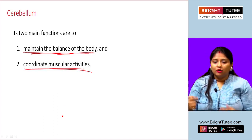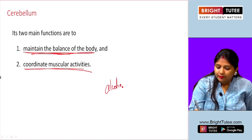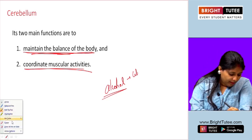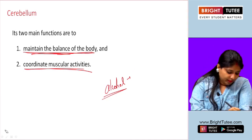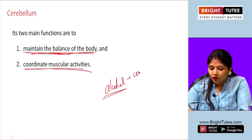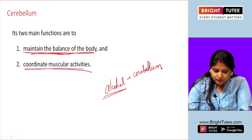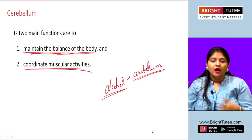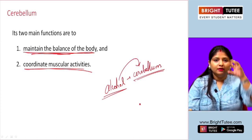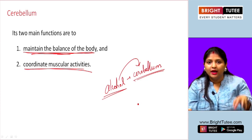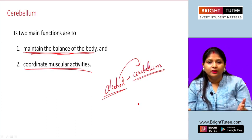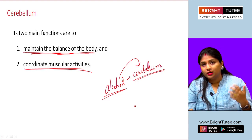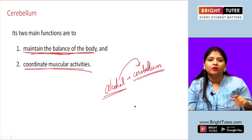Alcohol largely affects the cerebellum. A person who has consumed a lot of alcohol is not able to walk in a straight line because alcohol affects the center for movement and balance. That is why alcohol is not good for the brain — it disrupts the cerebellum's function, causing the person to be unable to move straight and to fall frequently.